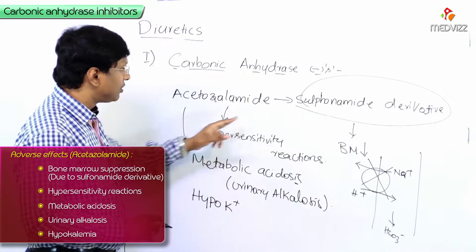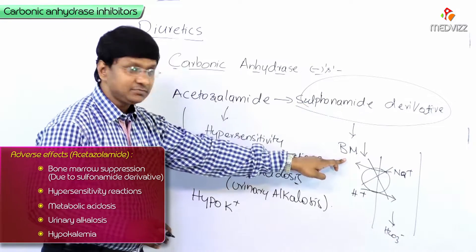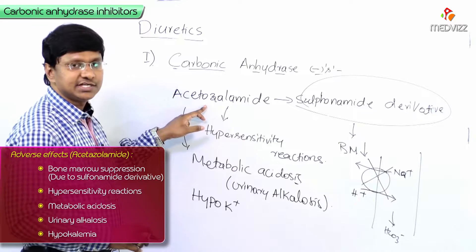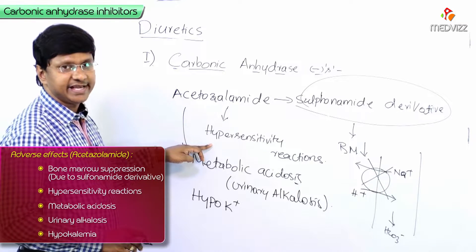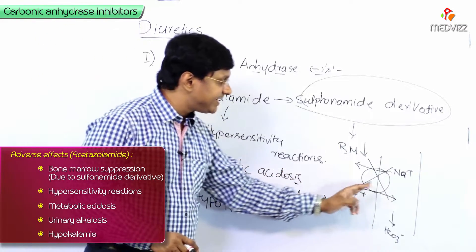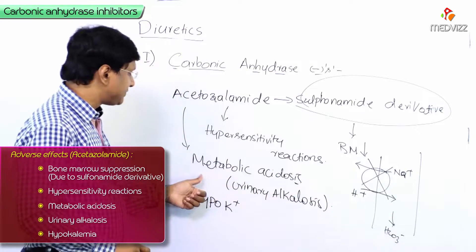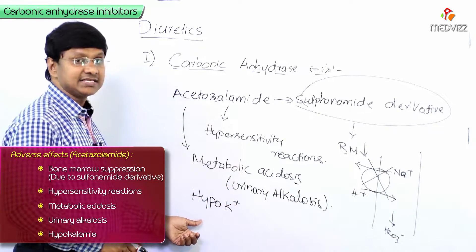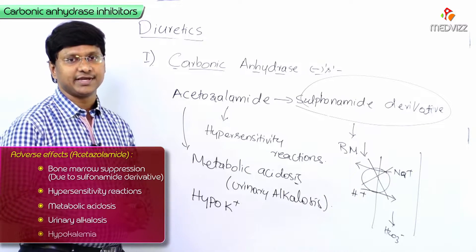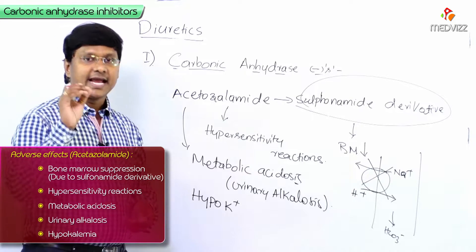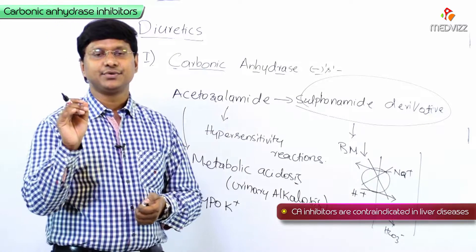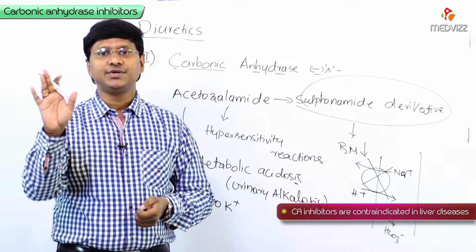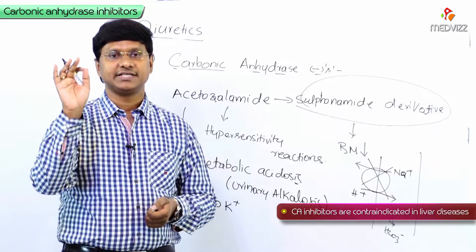So these are the adverse effects of acetazolamide. Being a sulfonamide derivative, it causes bone marrow suppression and hypersensitivity reactions. By inhibiting H+ secretion, it results in metabolic acidosis and urinary alkalosis. Lastly, it causes hypokalemia. Importantly, carbonic anhydrase inhibitors should not be used in the presence of liver disease.